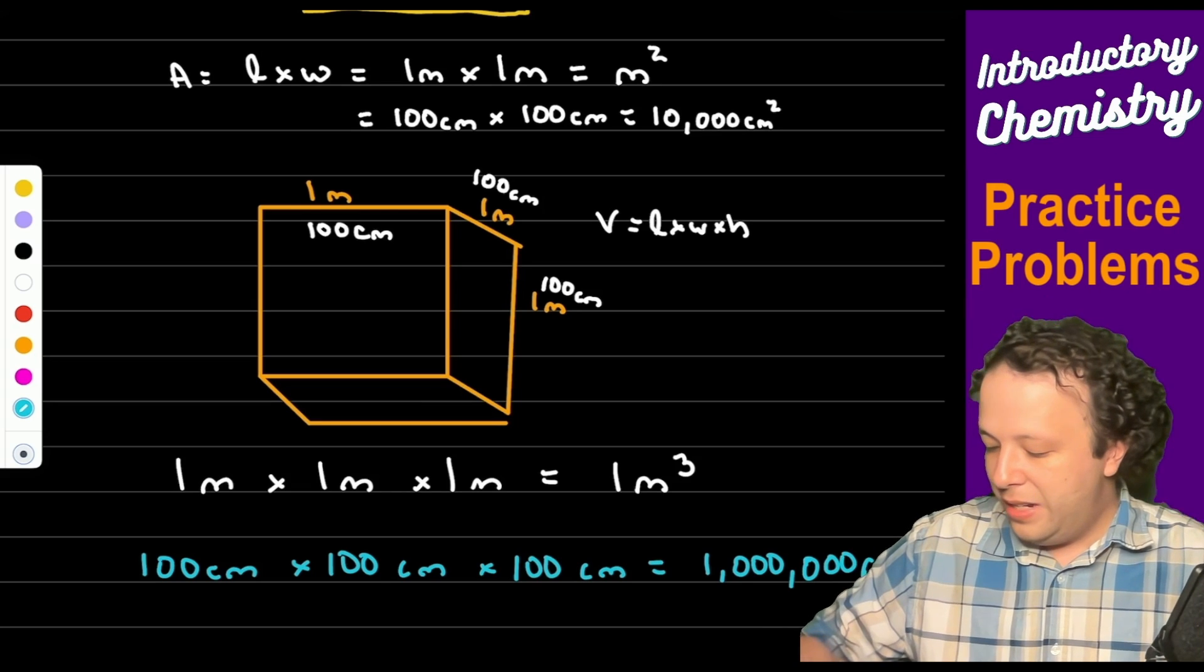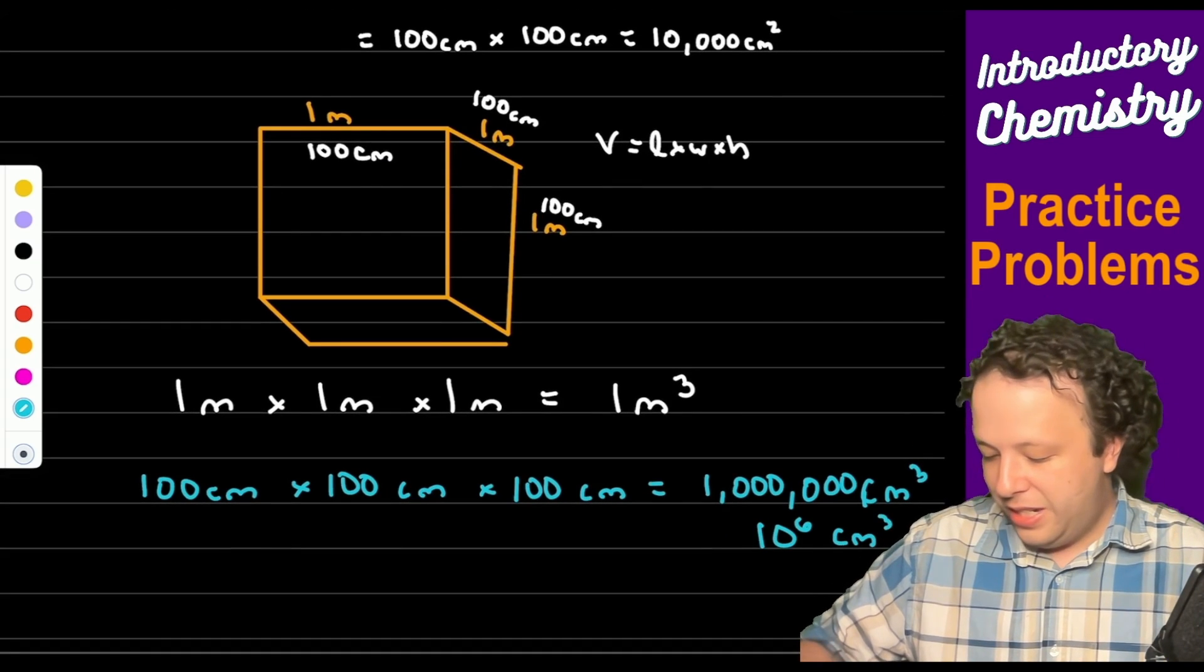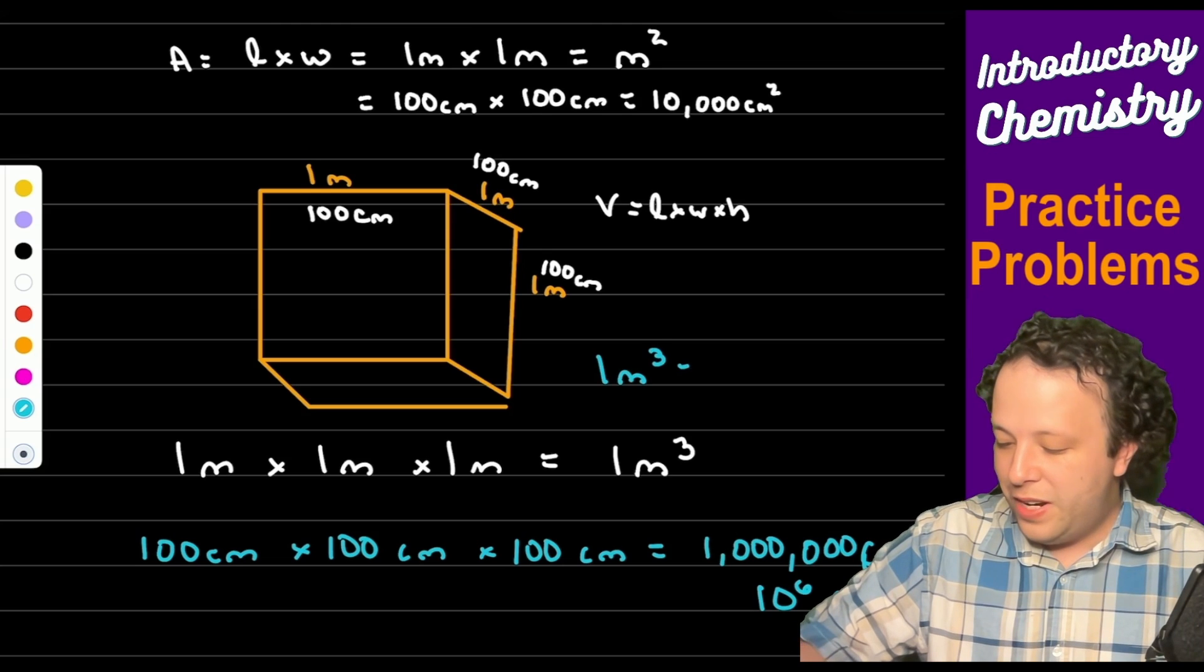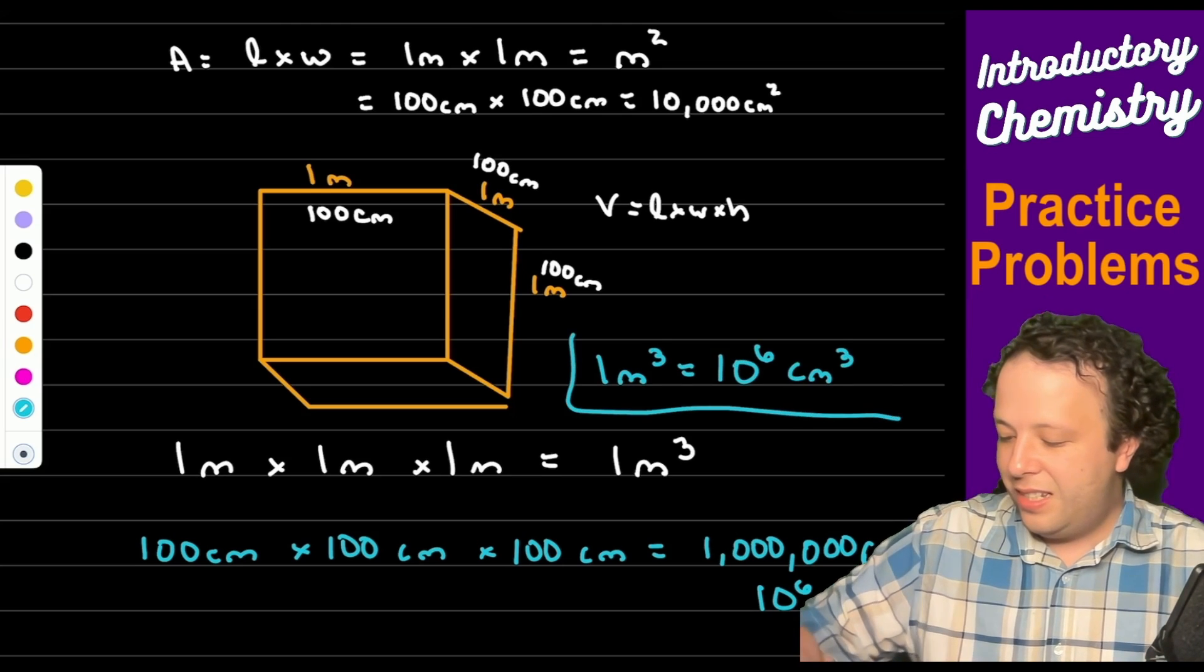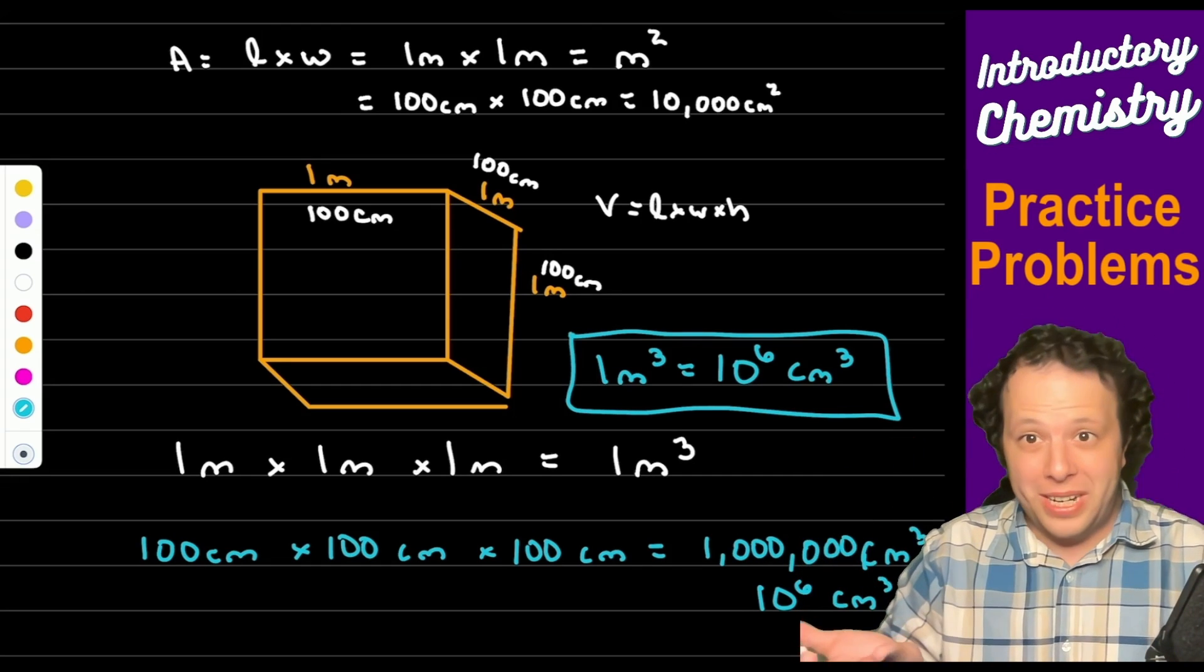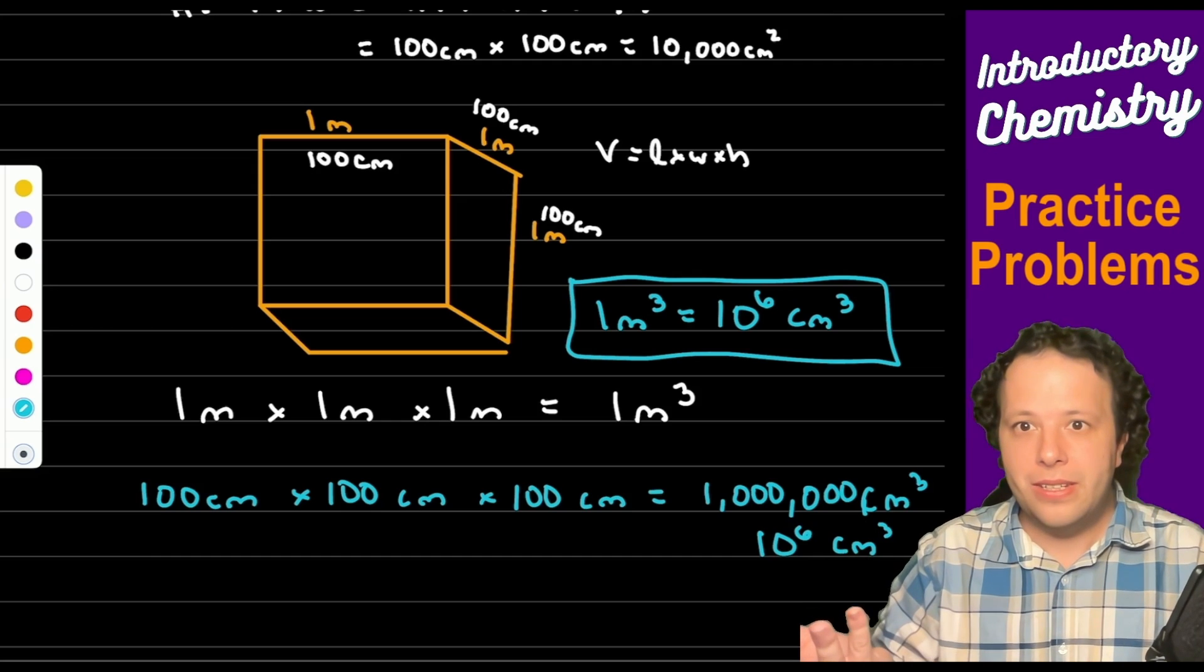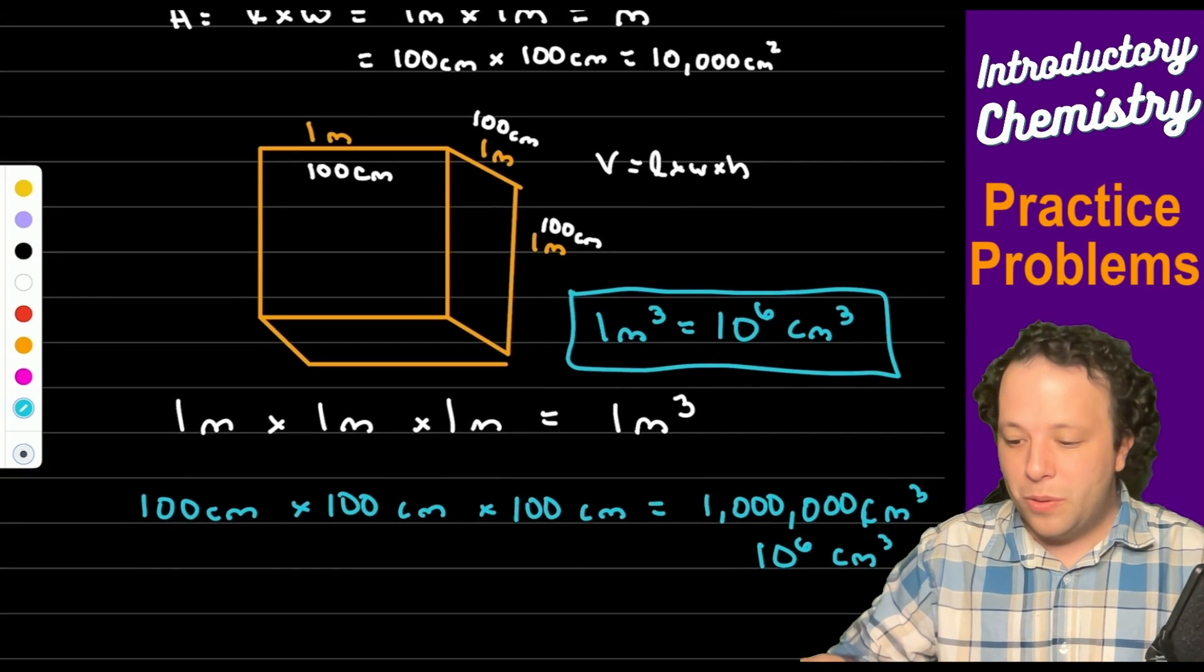So when we are doing this problem, this here on the bottom is our conversion factor. So one meter cubed is 10 to the 6 centimeter cubed and we have to use that for our problem. So this is something I'd write down. But be aware that when it comes to cubes you have to derive it and that's for every cubed function. It's not just a normal conversion.